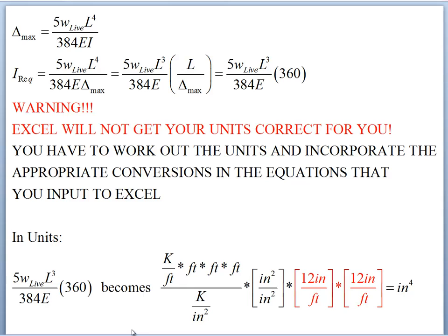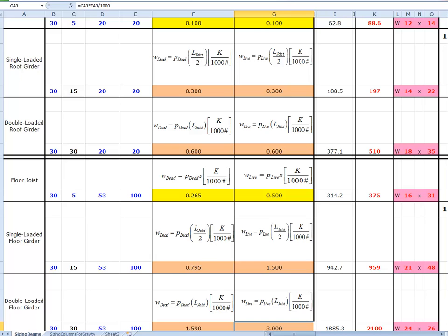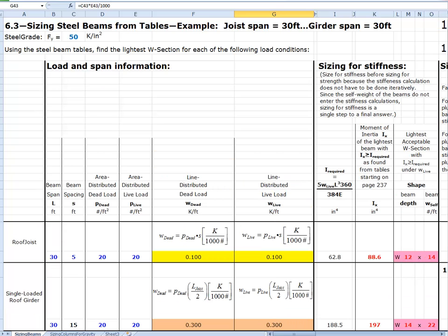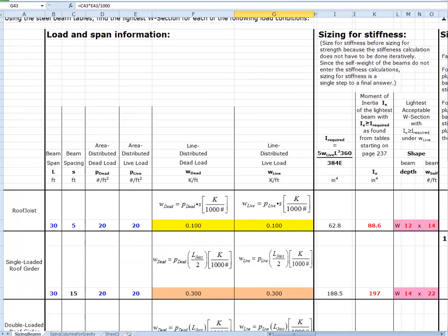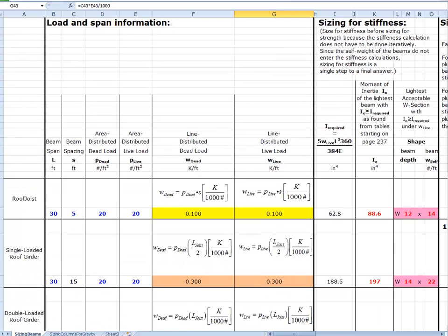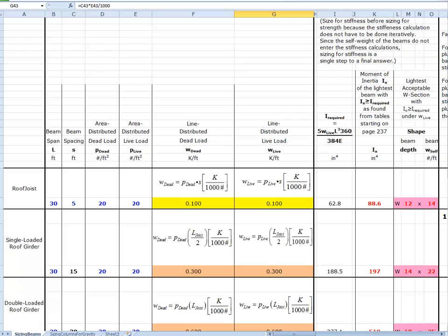The really crucial thing to notice is that we've introduced two factors of 12 — which multiply to 144 — that we would not have known were there if we hadn't tracked and properly converted the units. These 12s must go into the formula we enter into our Excel spreadsheet, or we'd be off by a factor of 144 and would undersize the beam.